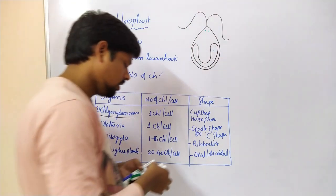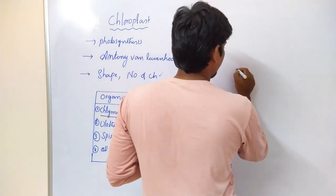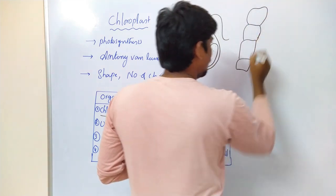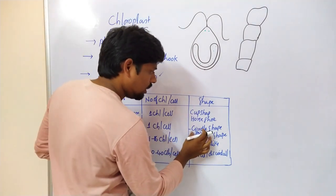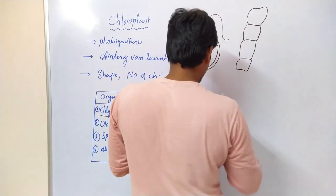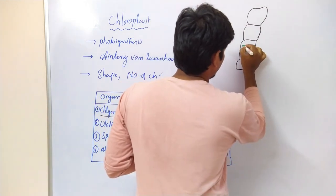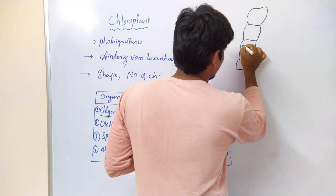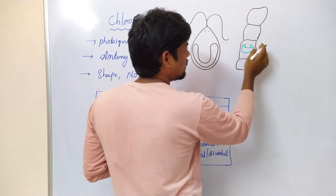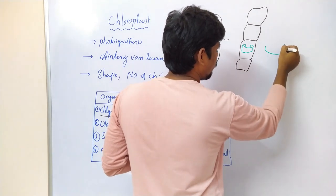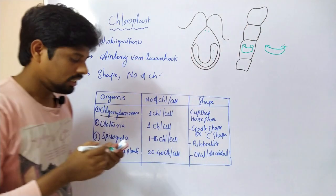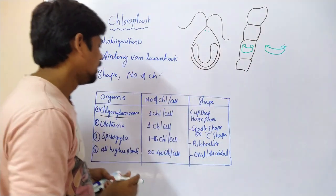Coming to Ulothrix - Ulothrix also has a girdle chloroplast or C-shaped chloroplast. Like this - this is the C-shaped, in this way, containing one chloroplast in each cell.